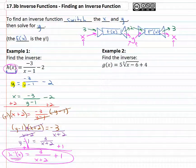Let's find another inverse. Let's find the inverse of g(x), when g(x) is equal to five times the cube root of x minus six plus four. Again, remember the g(x) part, that's the y equals five cube root of x minus six plus four. And again, in order to find the inverse, we're going to switch the x and y. So now it's going to be x equals five times the cube root of y minus six plus four.